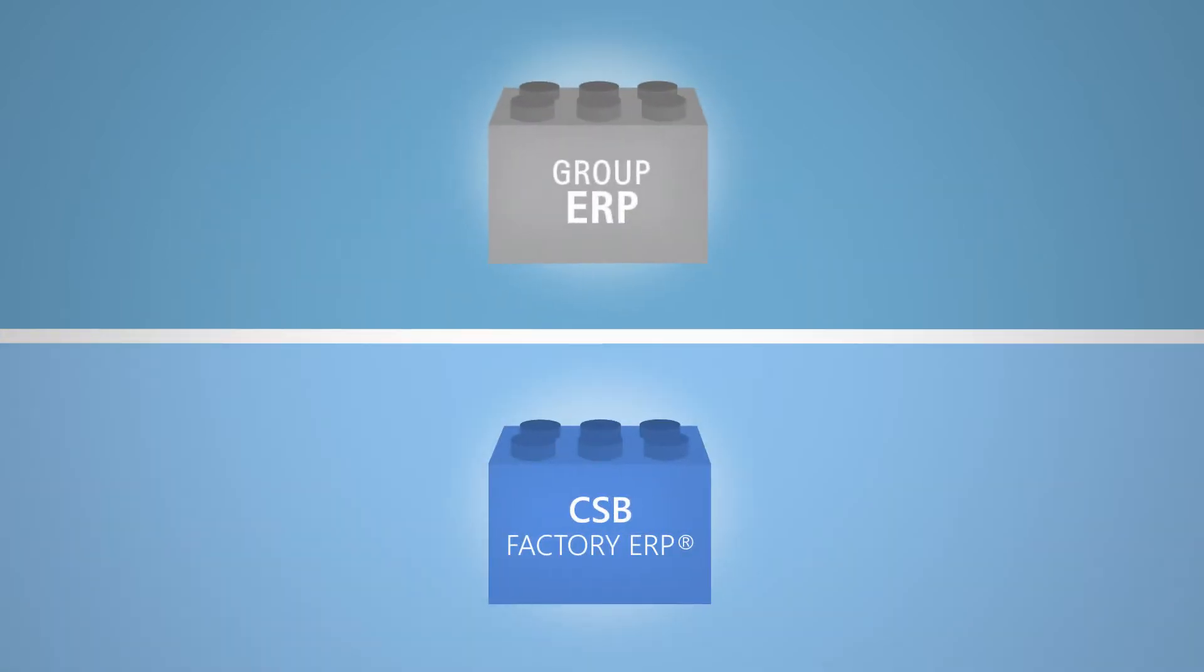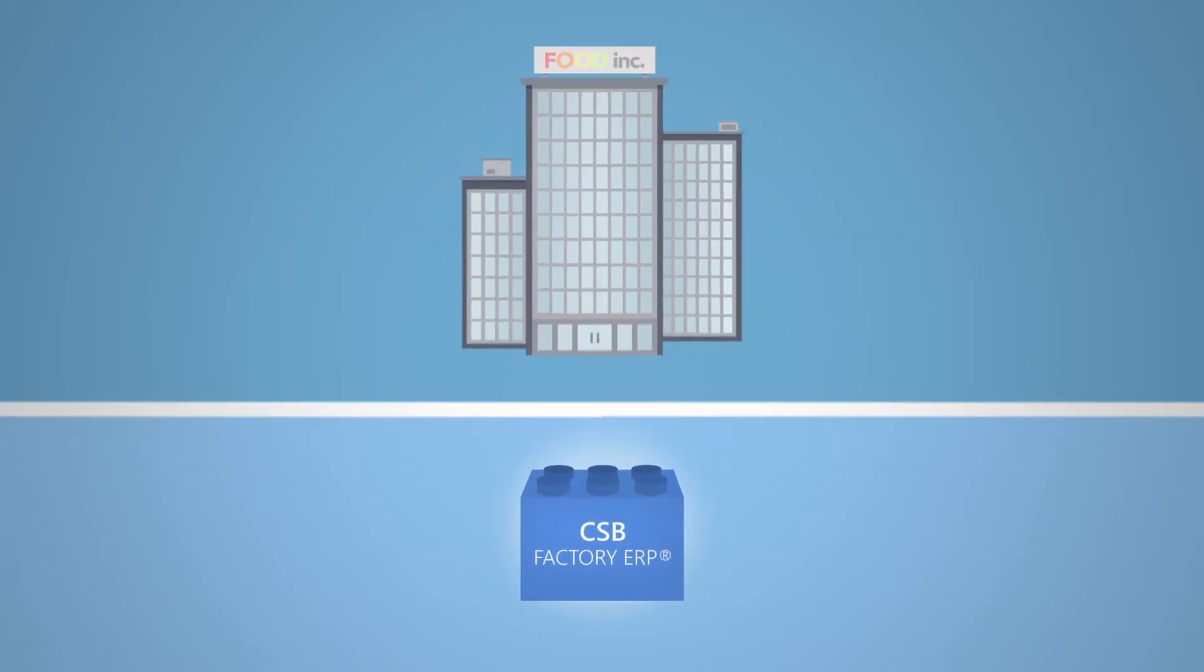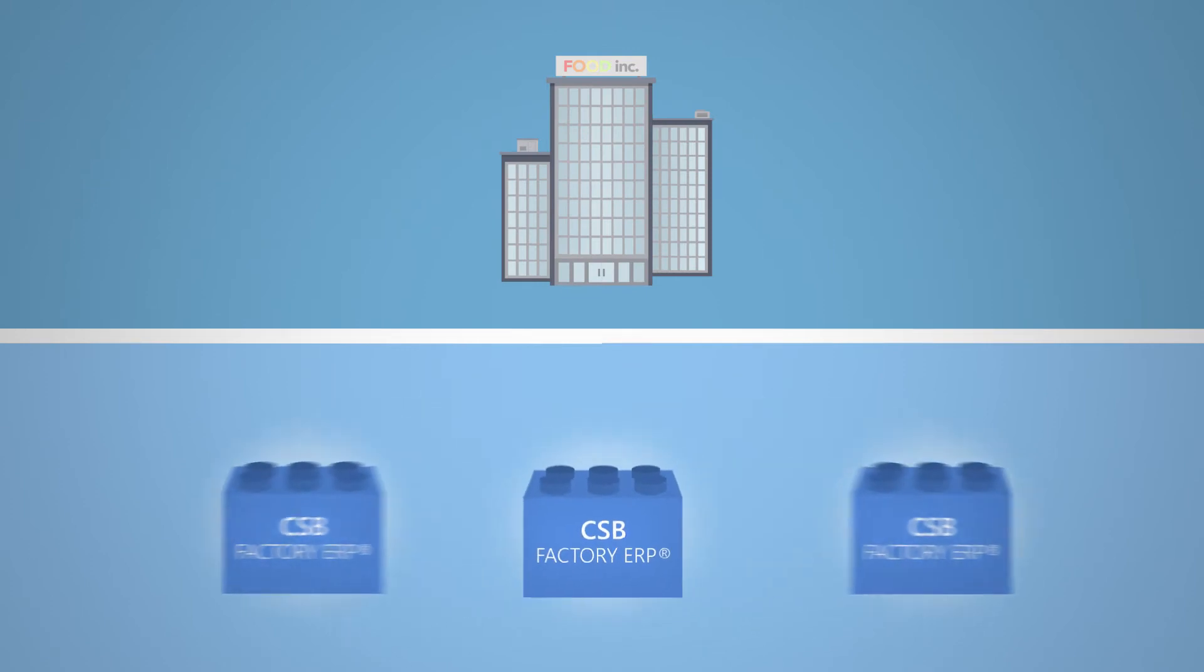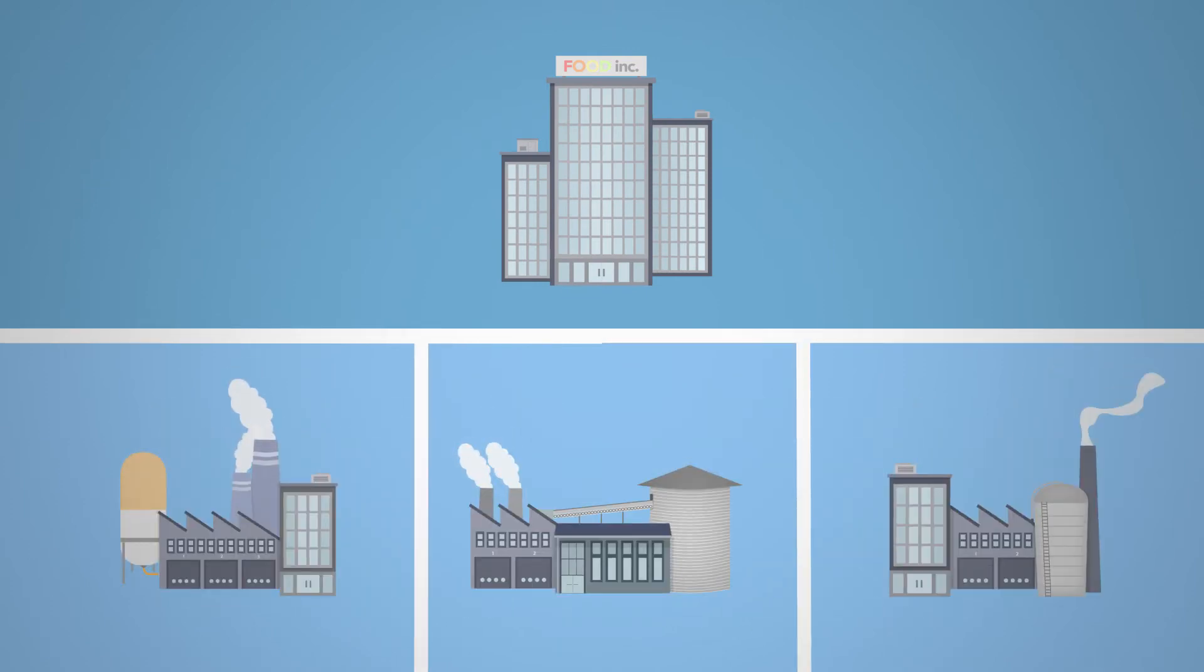The existing group ERP will continue to manage the group's finances, controlling and business management. The factory ERP, by CSB on the other hand, supports the operational management of the factories.